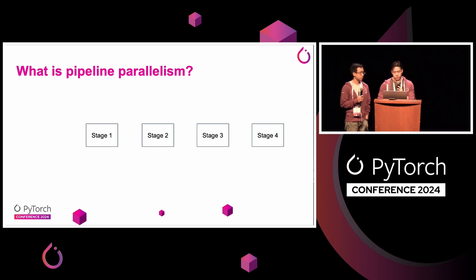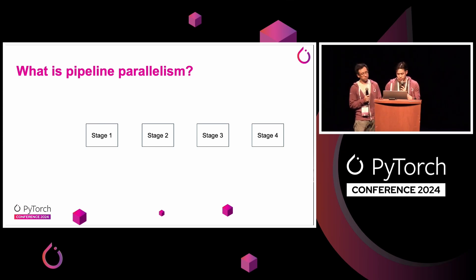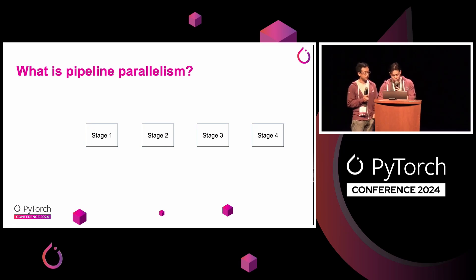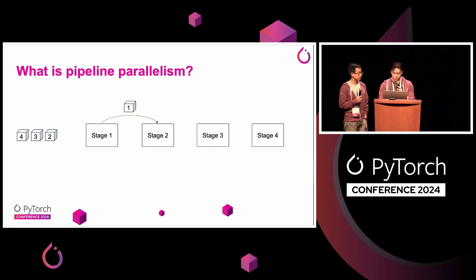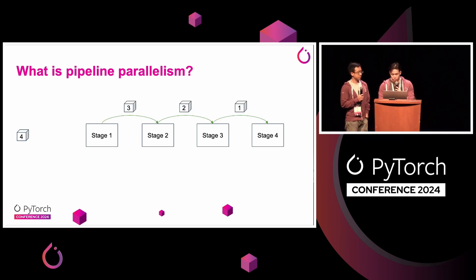This is rather naive and not very efficient, because only one stage can process that mini-batch at a time, and all the other ones will be idling. So the idea with pipeline parallelism is you take that mini-batch and split it into micro-batches. Now you can take these micro-batches and fill up the pipeline. You can see this data flow of micro-batches — and this is for forward, but you can do similarly for backward.